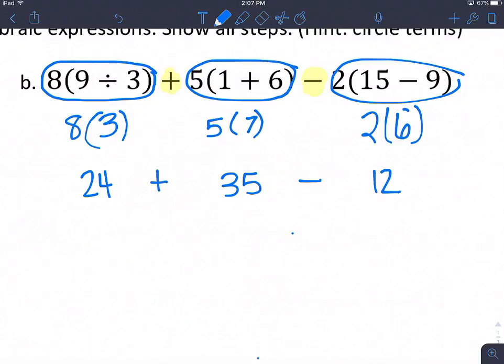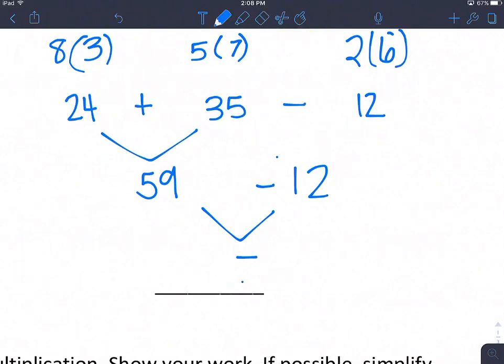Again, I'm going to just copy down the symbols that are between, and we're going to go from left to right. So 24 plus 35. Well, 5 plus 4 is 9, 2 plus 3 is 5, so 59. And then 59 minus 12 is 7 and 4.